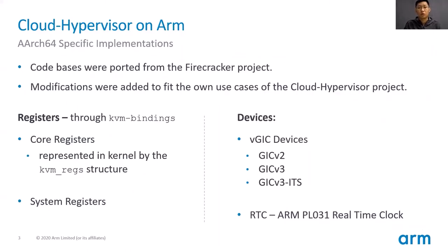I am going to introduce the AArch64-specific implementations added to Cloud Hypervisor. Code from this part was originally from the Firecracker project, with modifications to fit Cloud Hypervisor's requirements. The first part covers AArch64 registers, based on the KVM binding crate from RustVMM. Similarly to the Linux kernel, we divided AArch64 registers into Core registers and System registers. Key devices for AArch64 are the GIC device that manages interrupts and the RTC device that provides the clock. GICv2, GICv3, and GICv3 ITS were implemented respectively based on KVM I/O controls. The RTC device is implemented through software emulation.